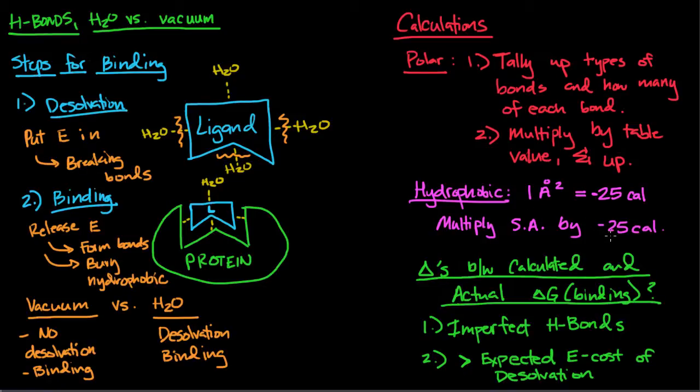And the last thing we're going to talk about is differences between the calculated and the actual delta G of binding. So oftentimes when you calculate it you're going to get a higher value than the actual value of delta G.